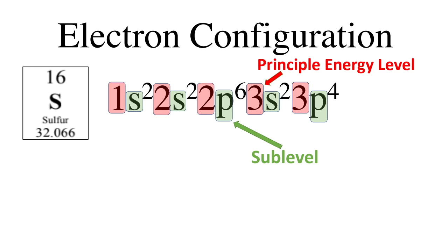These sublevels are in larger principal energy levels. The number of electrons in the sublevel is represented by a superscript number.